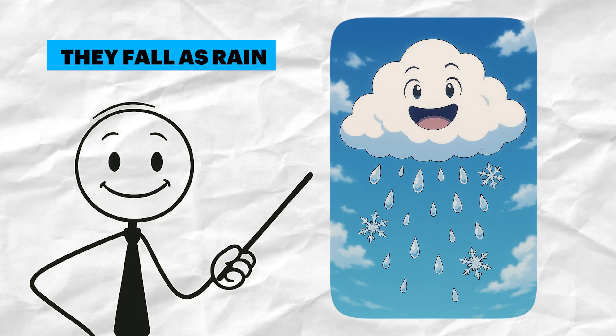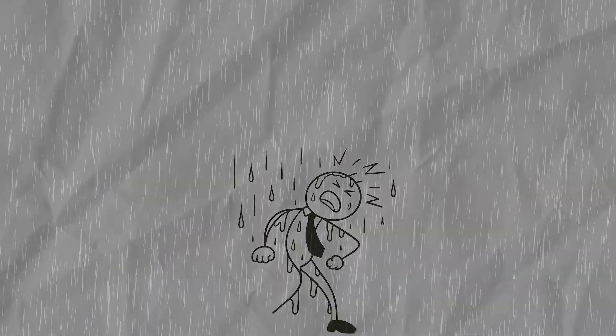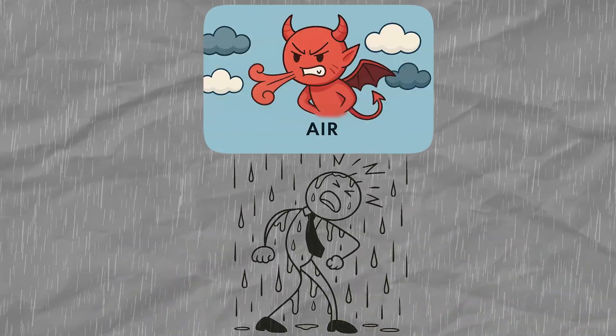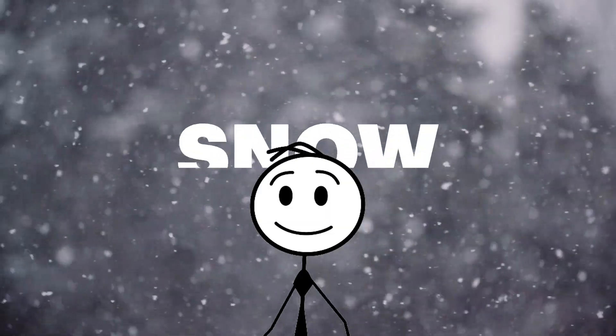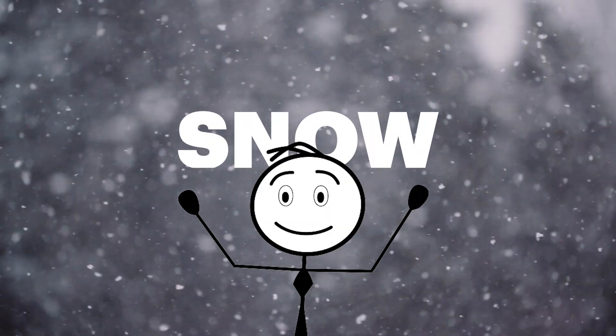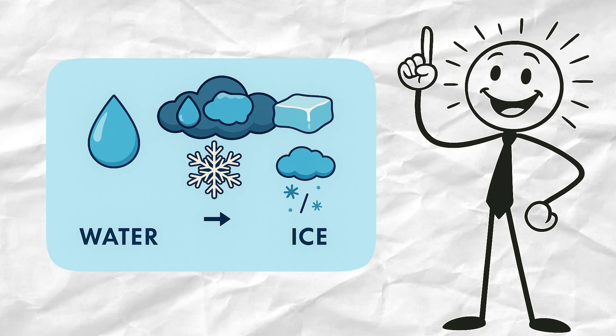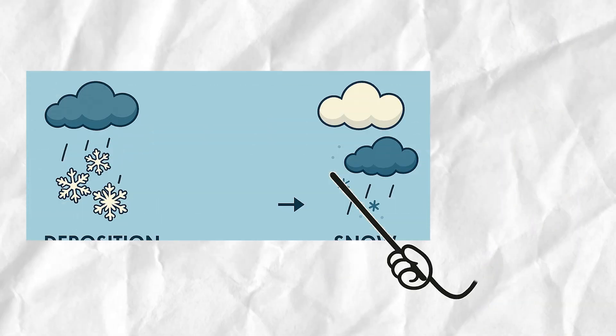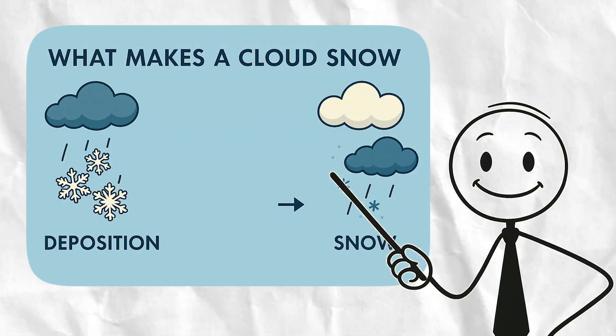They fall as rain. So, that peaceful afternoon drizzle or the summer downpour that soaks your clothes, that's all thanks to warm air all the way down. Then we have snow. Now, snow, that's something else. It forms way up in the clouds when water vapor skips the liquid stage entirely and turns straight into ice crystals. That's called deposition.